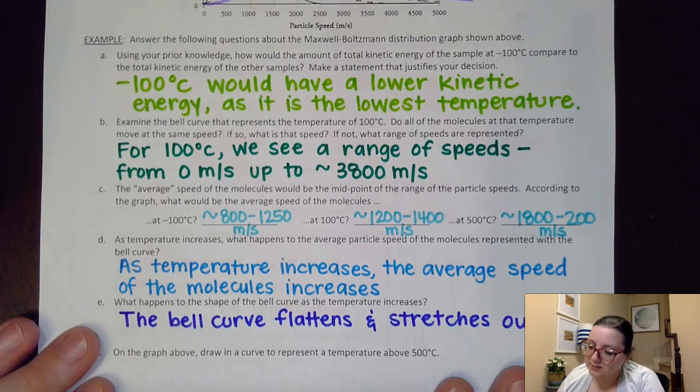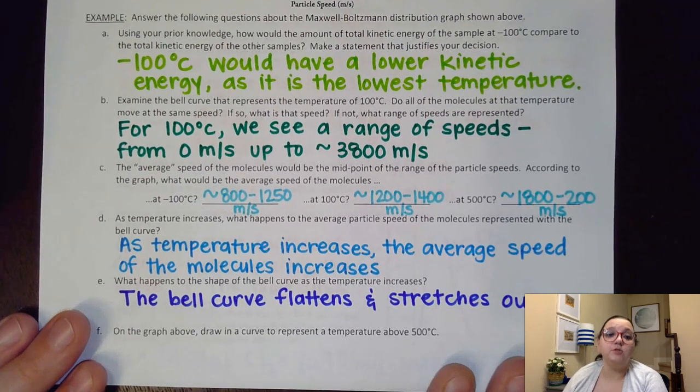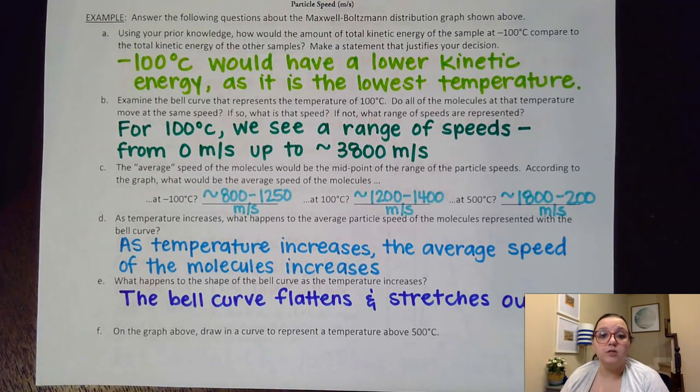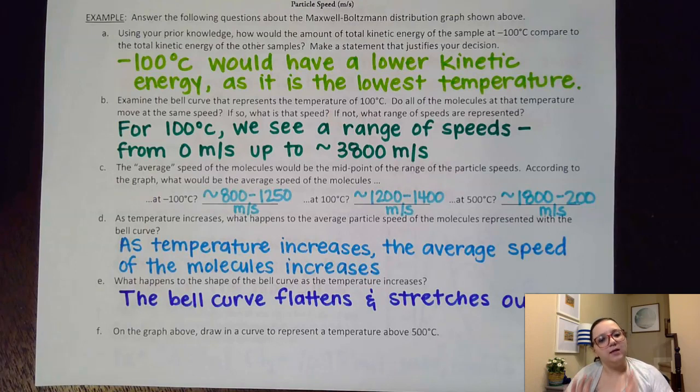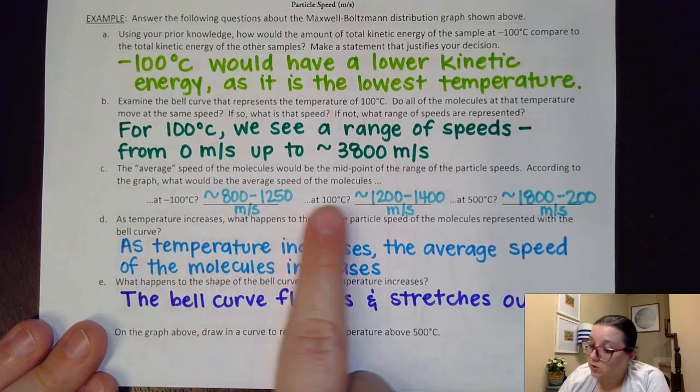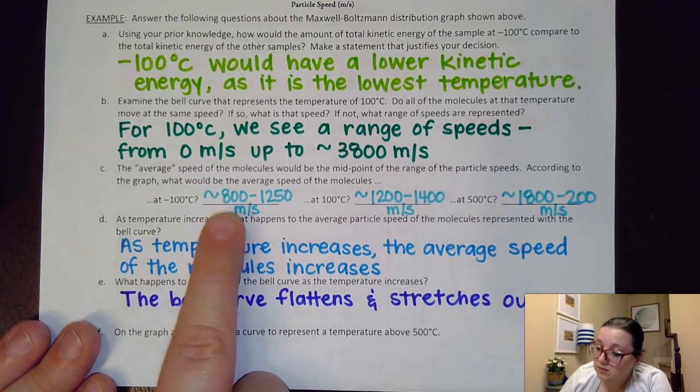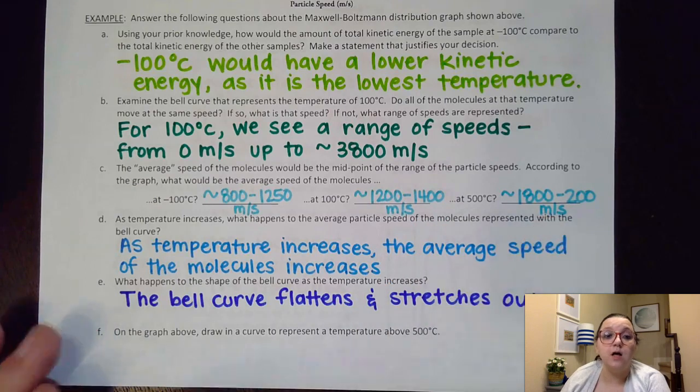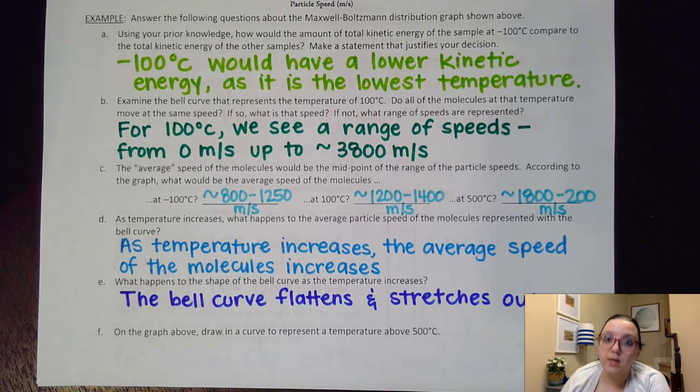So then it asks what would the average speed of the molecules be for each of our temperatures. And so I kind of ballparked an approximation of where my peaks were at. You might have had a different value here so that's why I put a range on these. You probably had an exact value which is fine. Really the key thing I wanted us to see here is that as we increase our temperature the speed, the average speed of those molecules do increase.